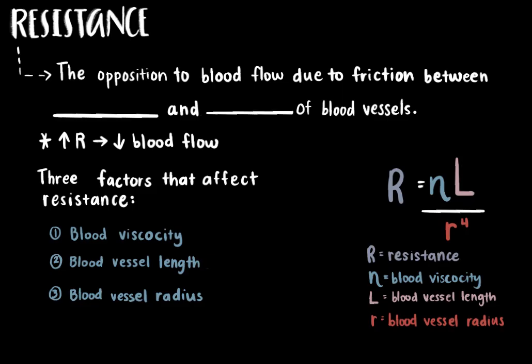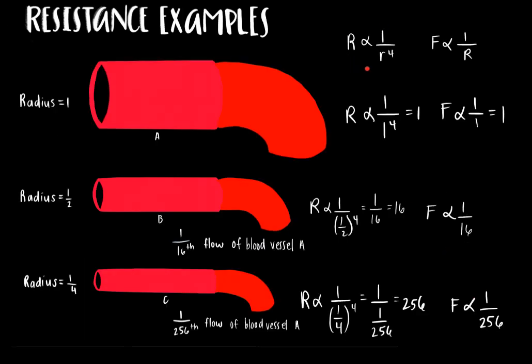The last factor — and most important when it comes to impacting blood flow — is resistance, which is the opposition to blood flow due to friction between blood and the walls of blood vessels. Increasing resistance in a blood vessel will decrease blood flow. There are three factors that affect resistance: blood viscosity, blood vessel length, and blood vessel radius. The equation is: resistance equals blood viscosity times blood vessel length divided by blood vessel radius to the power of 4. Because blood vessel radius is raised to the fourth power, it is the main determinant of resistance, and small changes in radius can cause large changes in resistance.